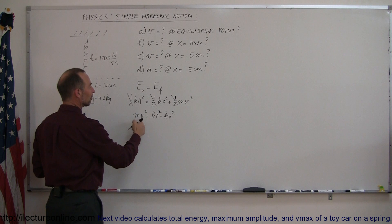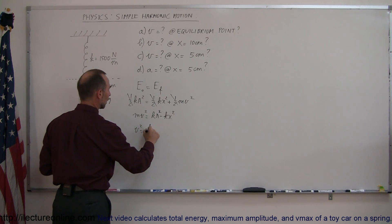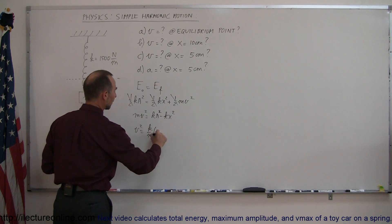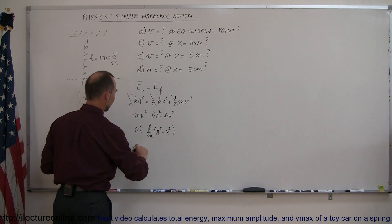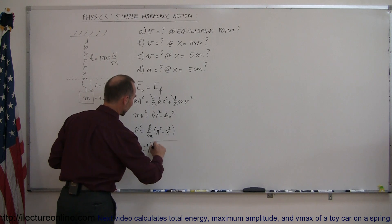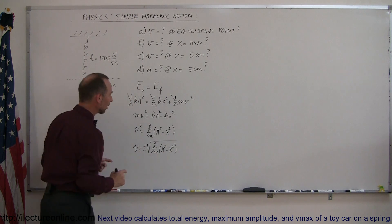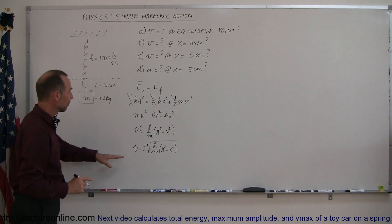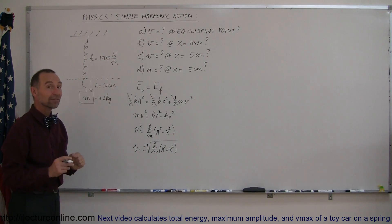Factoring out k and dividing both sides by m, we have v² = (k/m)(a² − x²), and finally velocity equals plus or minus the square root of (k/m)(a² − x²). Now we can go ahead and find the velocity at the various locations they're asking for.